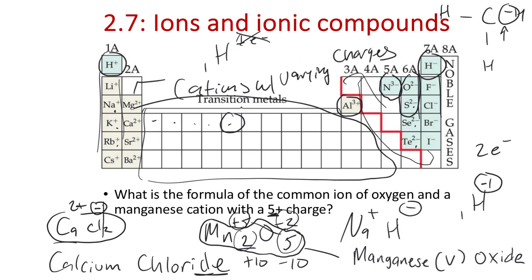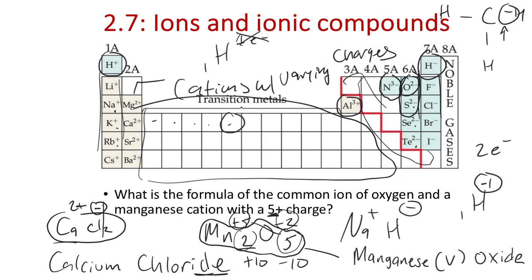We don't call it dimanganese pentaoxide—we just say manganese(V) oxide. The reason we don't need 'penta' is because the charge of manganese is expressed in the Roman numeral. Oxide is always O²⁻, and manganese(V) is Mn⁵⁺, so we balance the charges from there.